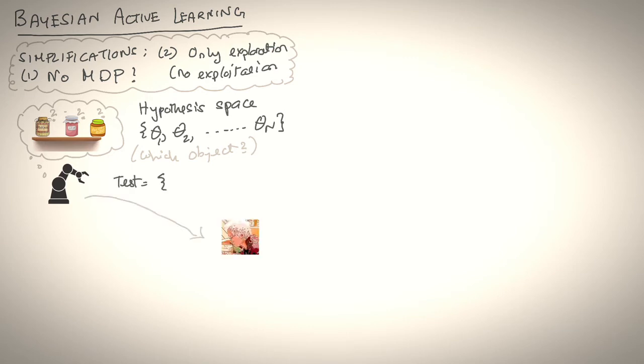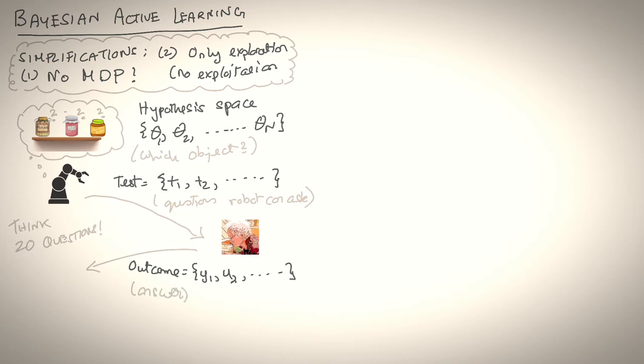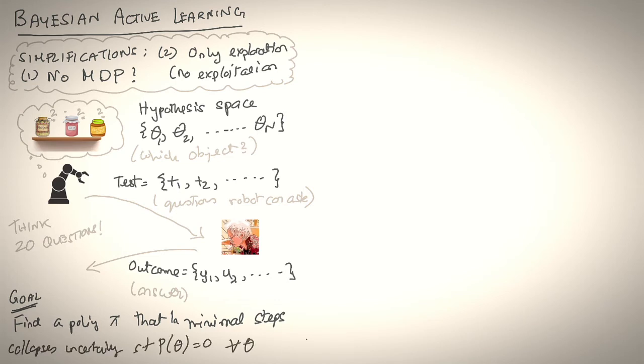In Bayesian Active Learning setting, we would define a hypothesis space, theta_1 to theta_n, where each hypothesis represents a possible jar that the human might have wanted. We then need to define a set of tests. Here, tests are questions that the robot asks the human. A good analogy is the game of 20 questions, where player 1 thinks of a place or an animal and player 2 tries to ask various questions up to 20 to figure out what they're thinking of. It's exactly the setting we're in. When the robot asks the human a question, the human responds with an answer, which is a set of possible outcomes. Upon receiving this outcome, the robot can then update its hypothesis by eliminating hypotheses that are inconsistent with the test outcome pairs.